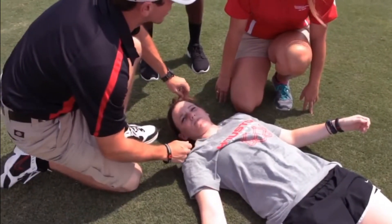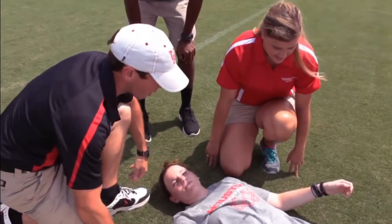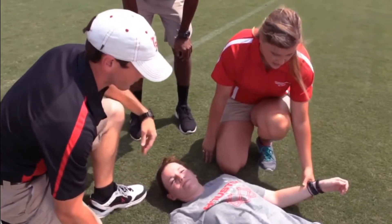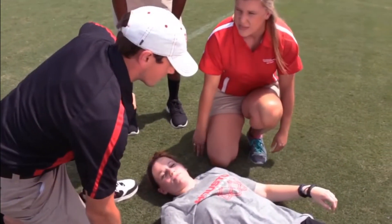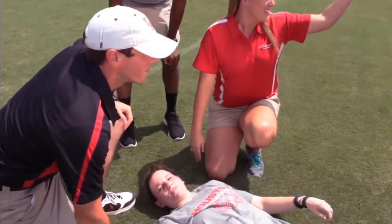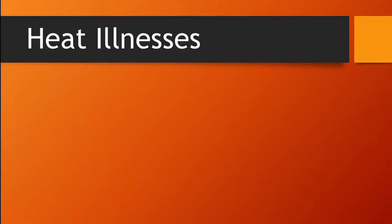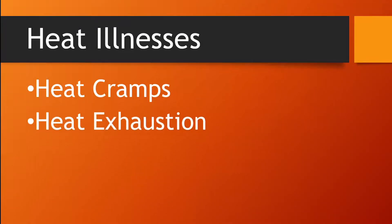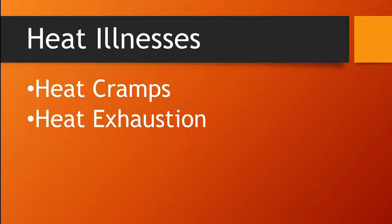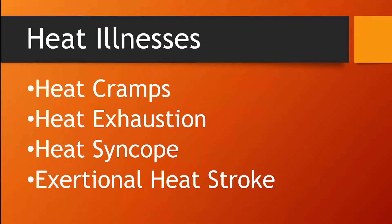That is why it's so important to know how to identify and treat each type of heat-related illness, as well as to know what you can do to reduce the risk in the future. There are different types of heat illnesses which range in severity and treatment: heat cramps, heat exhaustion, heat syncope, and exertional heat stroke.